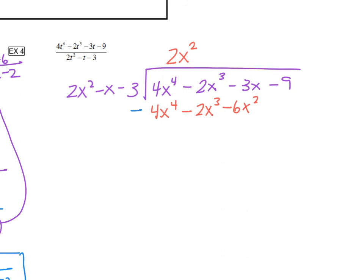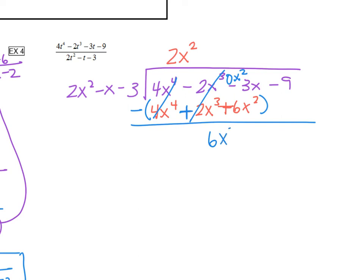Then we subtract. 4x to the 4th minus 4x to the 4th cancels. Negative 2x cubed minus negative 2x cubed — those cancel. Do you see how we have a minus 6x squared but we don't have an x squared to subtract it from above? It's almost like there's a 0x squared up here. So 0x squared minus negative 6x squared becomes positive 6x squared. Then we need to carry down our next term, which is minus 3x.